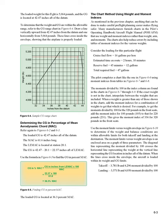Consider the loading for this particular flight: cruise fuel flow equals 16 gallons per hour; estimated time en route equals 2 hours; reserve fuel equals 45 minutes equals 12 gallons; total required fuel equals 47 gallons. The pilot completes a chart like the one in Figure 6-6 using moment indexes from tables in Figures 6-7 and 6-8.